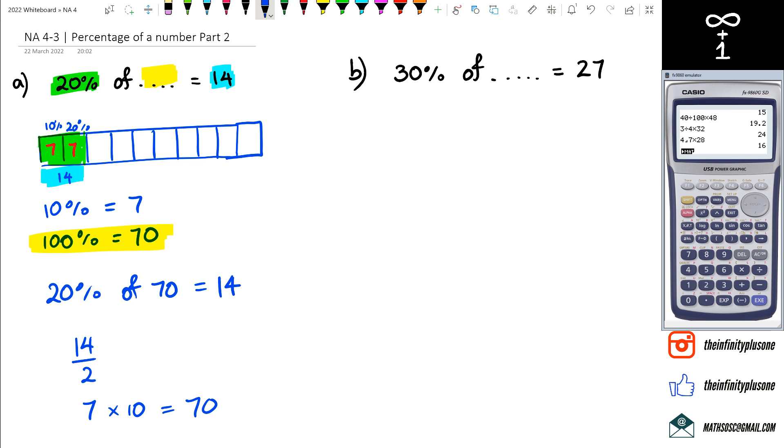So let's have a look at question B. We've got 30 percent of something equals 27. Once again I'm going to create this little blue box with 10 sections - 1, 2, 3, 4, 5... So we've got 27.